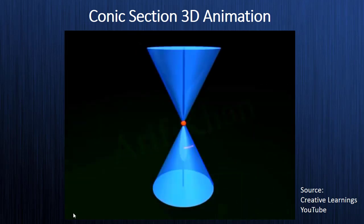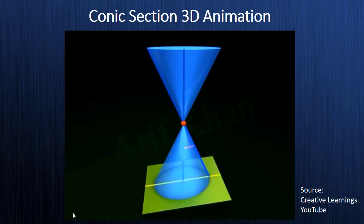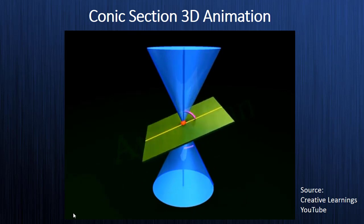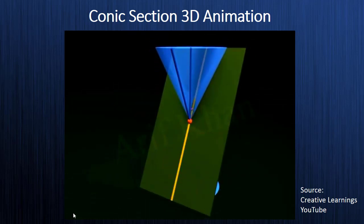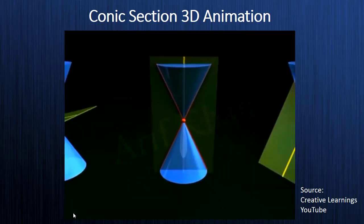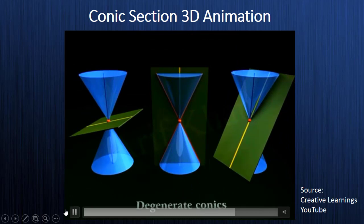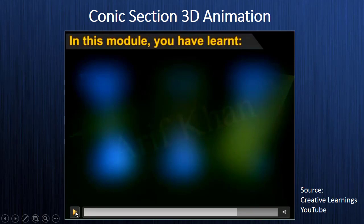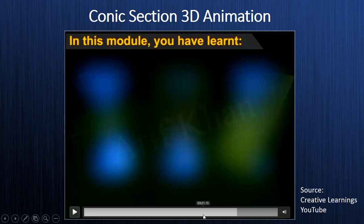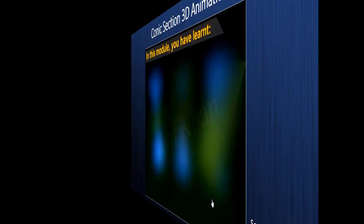Degenerate conics: if the plane intersects the double right circular cone at its vertex, the ellipse becomes a point, the parabola becomes a line, and the hyperbola becomes two intersecting lines. The figures so obtained are called degenerate conics. I think this video has cleared your doubts and given you a 3D animation flavor of the conic section. Thanks to Creative Learnings — if you are interested, please go and watch this video at Creative Learnings.